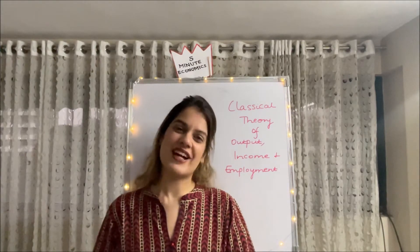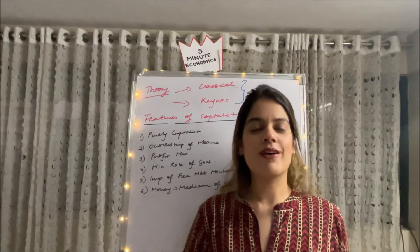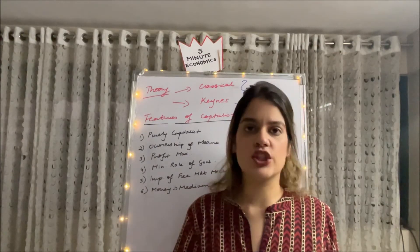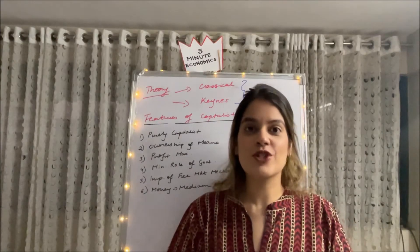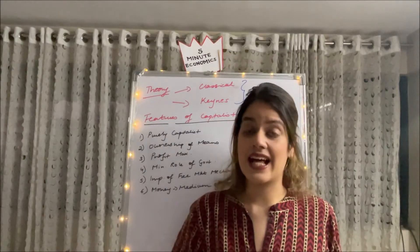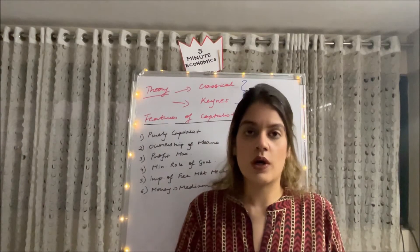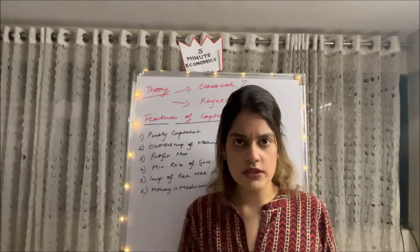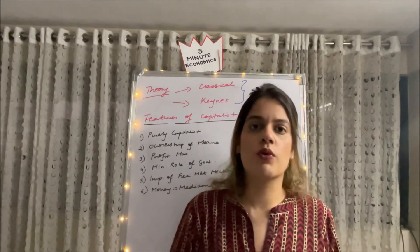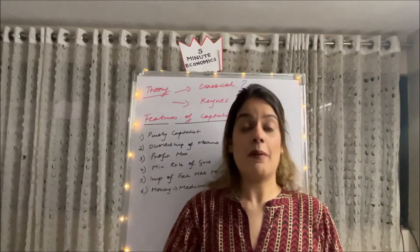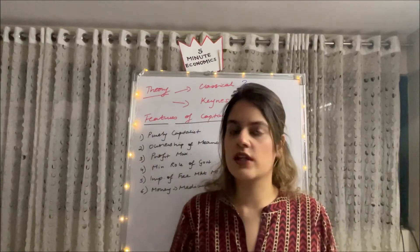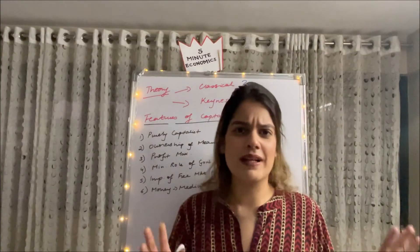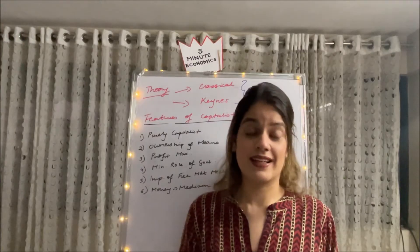Coming to the background of the theory of output, income, and employment — this theory has two versions: the classical and the Keynesian. Tracing the history of macroeconomics, we had two major schools of thought. The classical economists were the traditional economists who came much before the Keynesian economists. They rested their theories around a capitalist economy — economists like Adam Smith, Ricardo, and Mill.